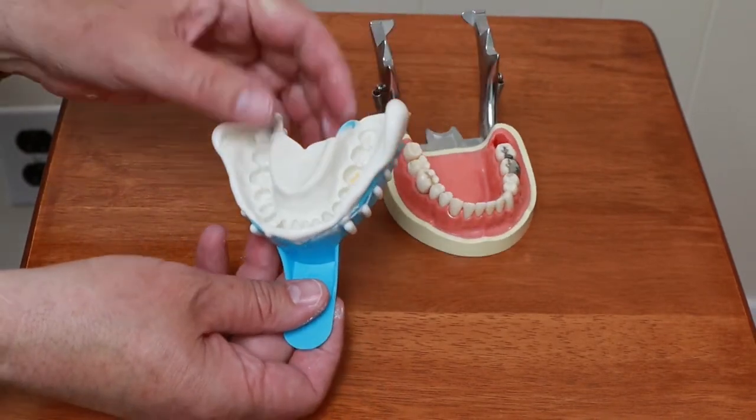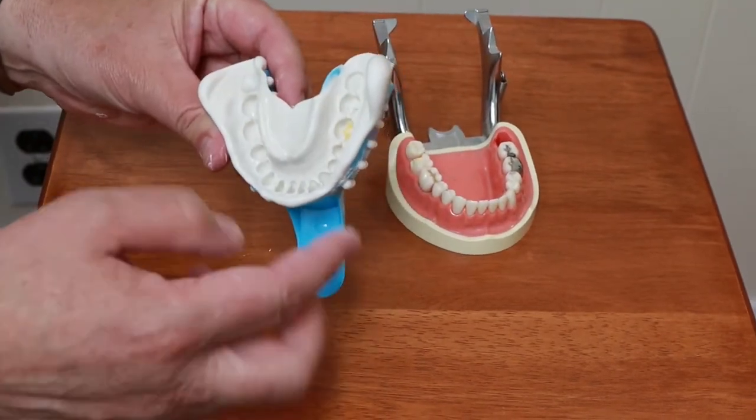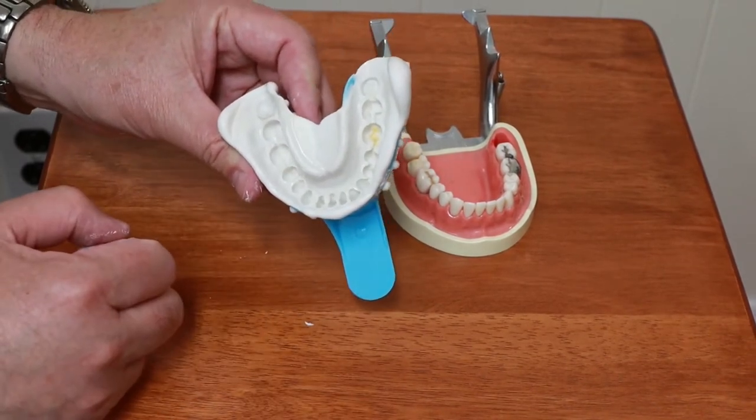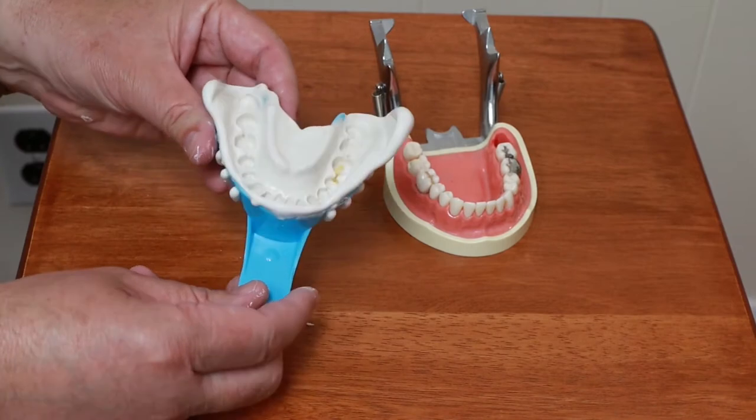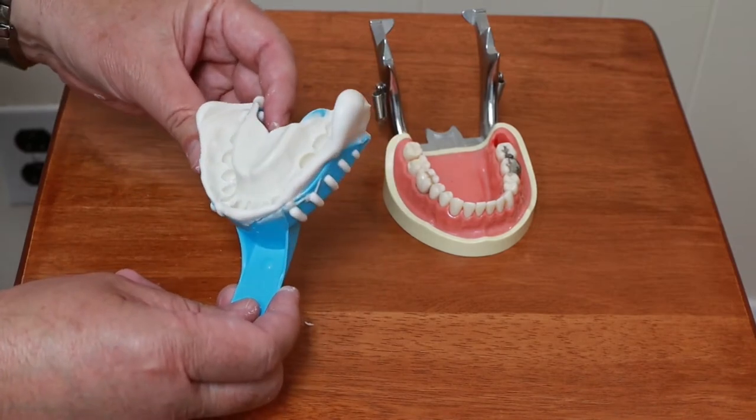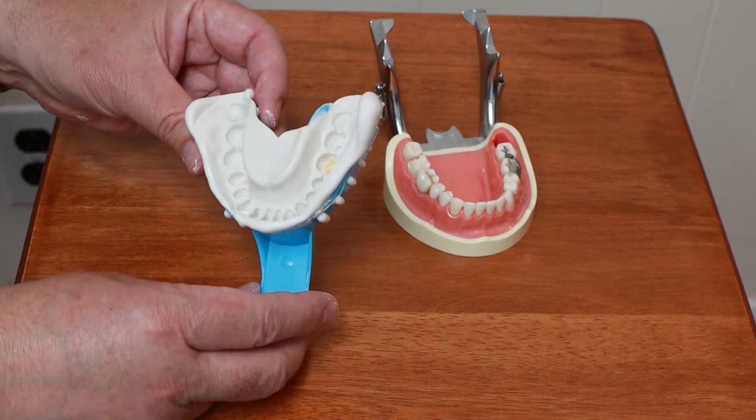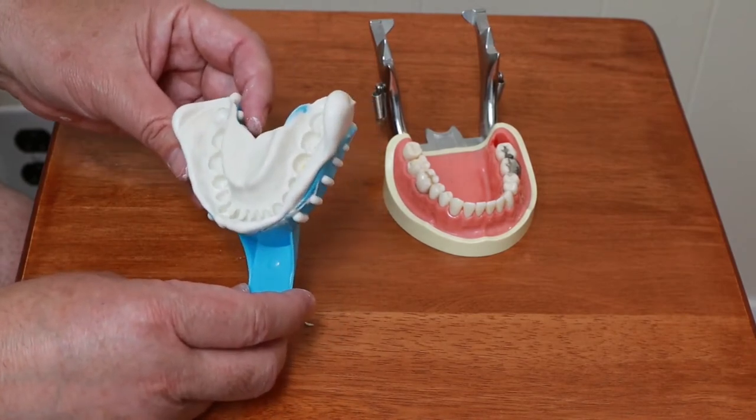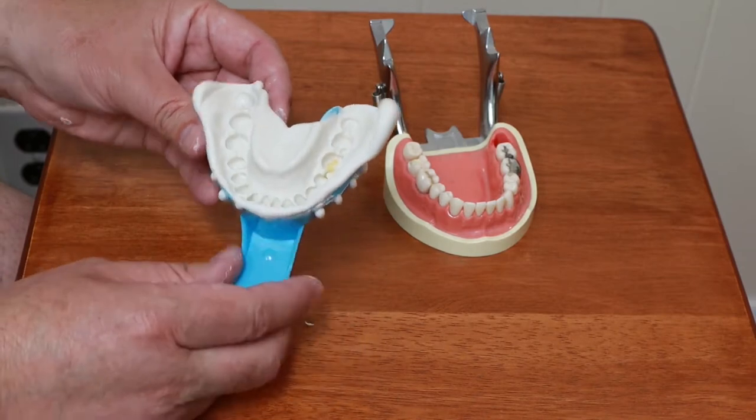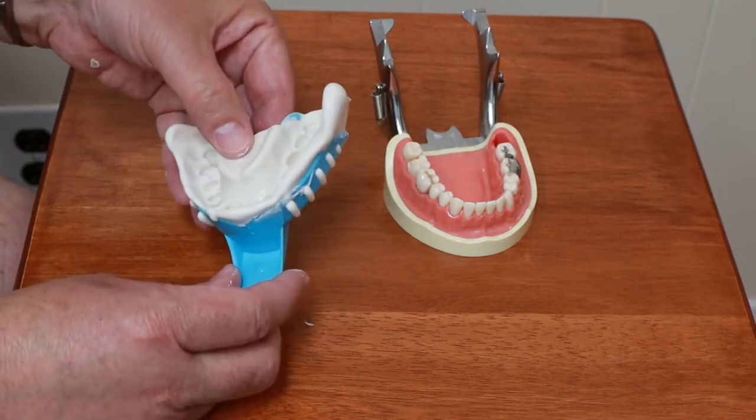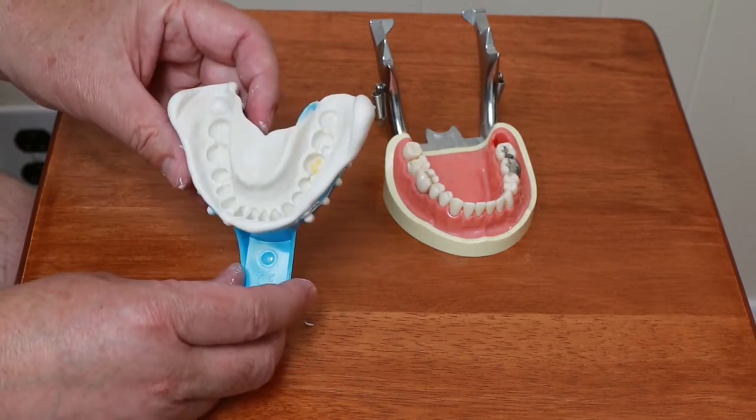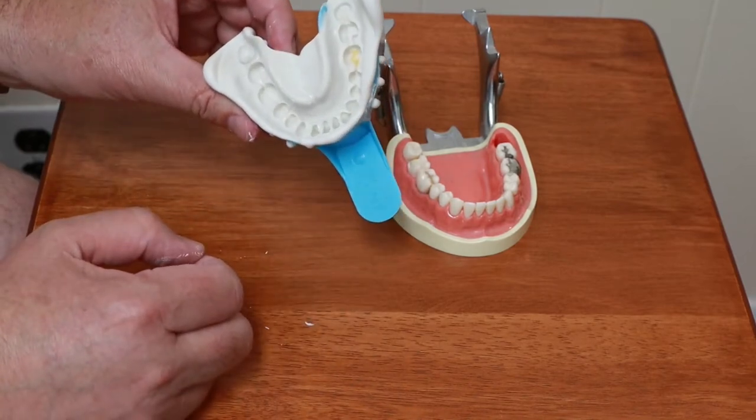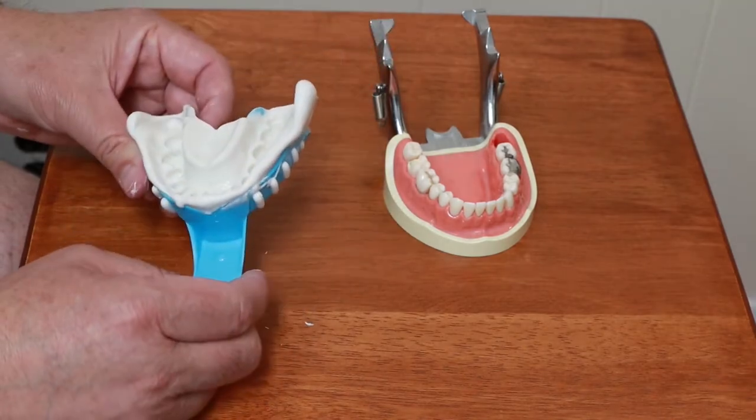For this mold I am going to pour this up in plaster before I send the impression out to the lab. The lab in this case is out in the Midwest so I got a FedEx it to him. This alginate material won't last the couple of days it takes for FedEx to get it to the lab. So I'm going to make a plaster model using this impression.